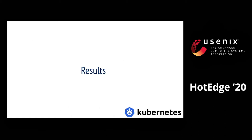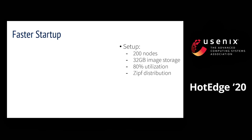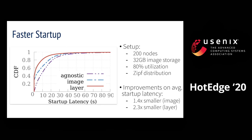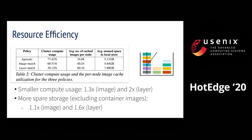Let's take a look at the results. We set up a Kubernetes cluster and generate synthetic container requests. We compare the image match and layer match scheduling policies against the baseline dependency-agnostic policy. For startup latency, we found that image match and layer match reduce the average startup latency by 1.4x and 2.3x respectively. Besides, image match and layer match improve resource efficiency by saving the amount of disk space to store container images, as well as the CPU cycles to decompress those images.